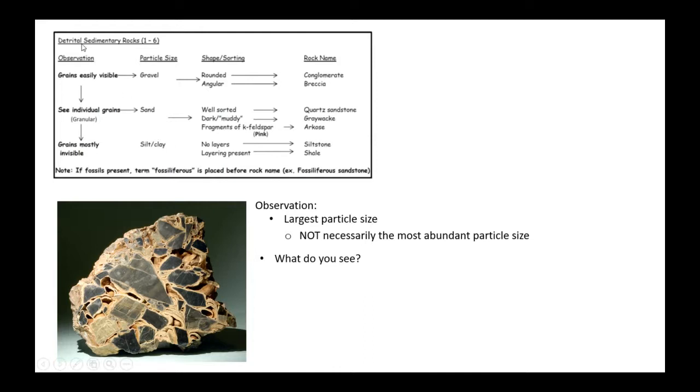If we look at the flow chart, the observation is: are the grains easily visible? We can definitely see some very large grain sizes here. So if the grains are easily visible, that indicates we have gravel-sized particles.